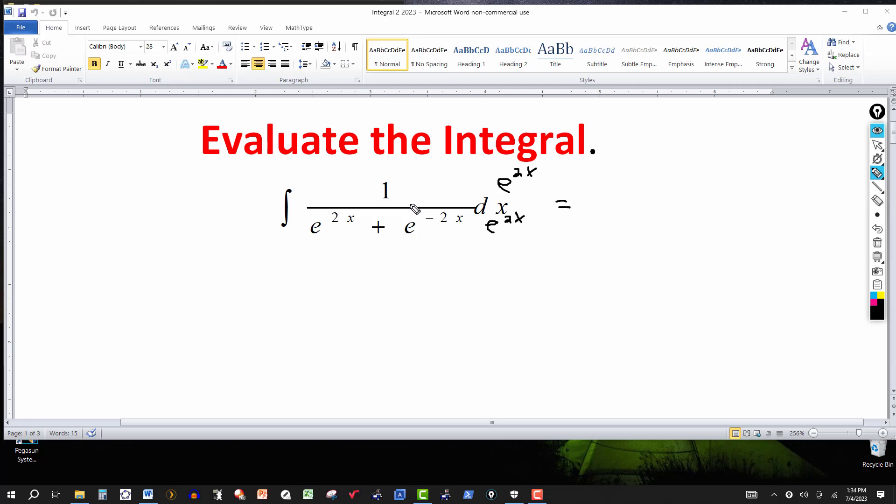Multiplying by e to the 2x, we get the integral of e to the 2x in the numerator. e to the 2x times e to the 2x is e to the 4x, but I'm going to write that as e to the 2x squared, and then e to the 2x times e to the minus 2x gives me e to the 0, that's 1. And this will be a dx here.